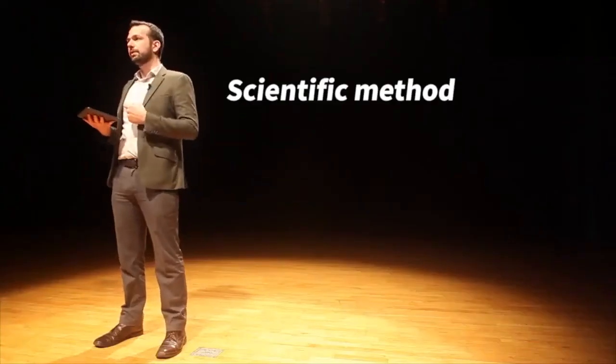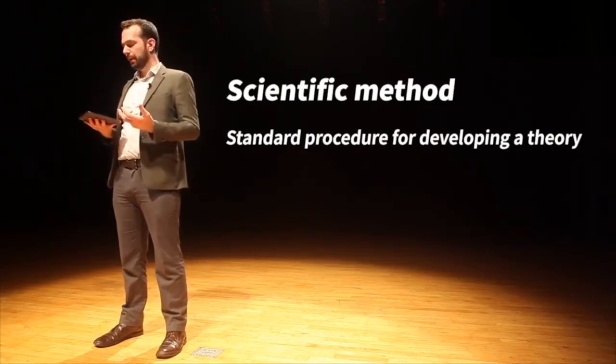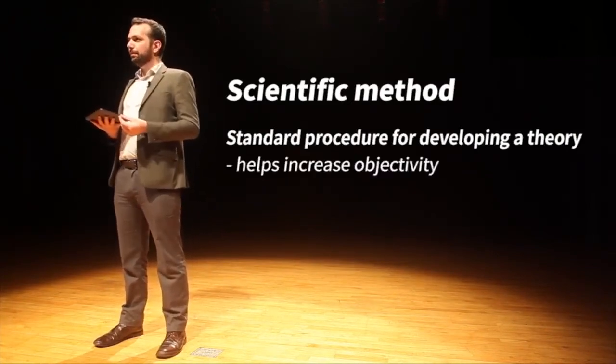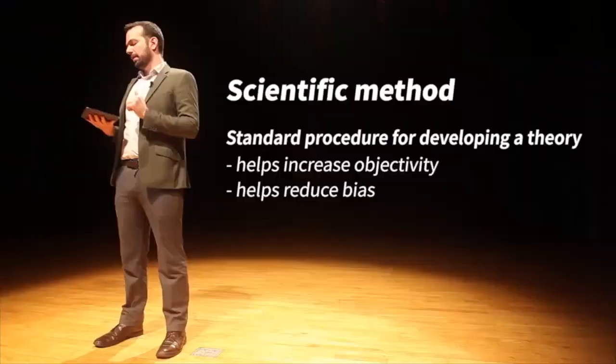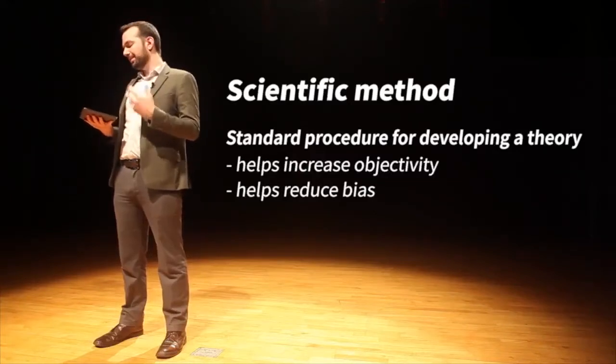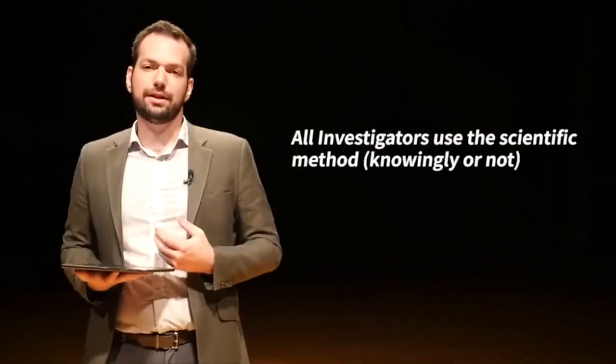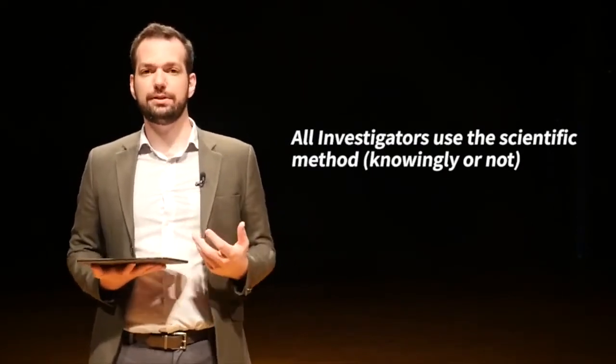The scientific method is just a process of investigation - a standard procedure for developing a theory. It helps increase objectivity because we're following a specific process. The scientific method doesn't really allow room for bias, so it helps reduce our innate biases. All investigators use the scientific method, knowingly or not. Many investigators don't think they're scientists, but they're actually using this process all the time.